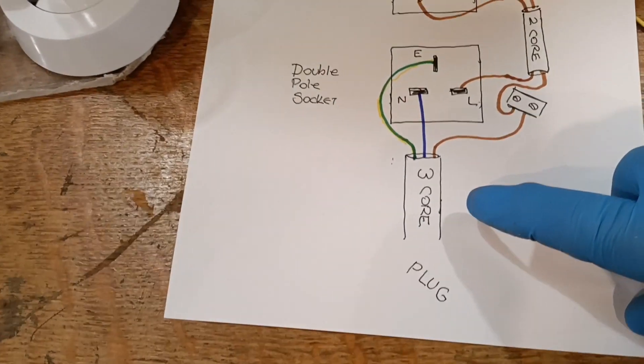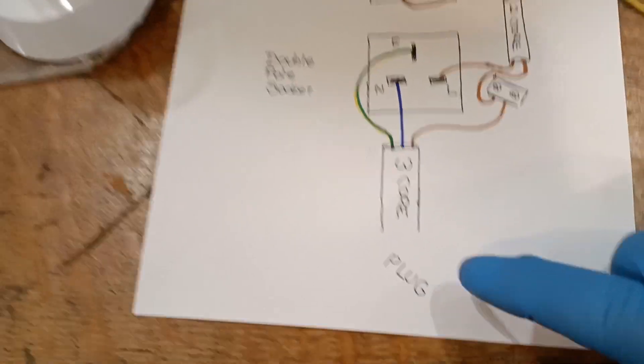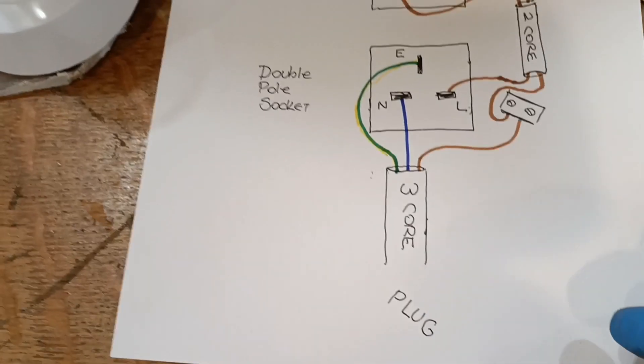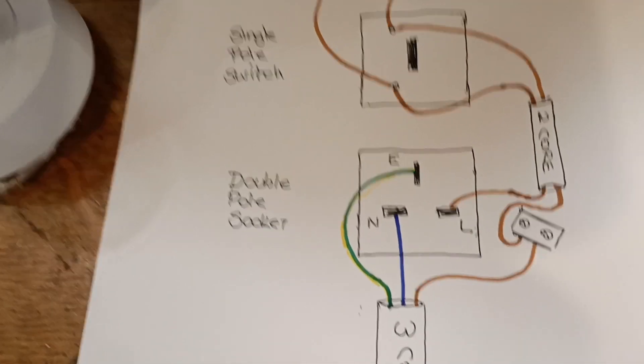You need a 3 core cable with a plug on the end with a 3 amp fuse. Don't use the 13 amp in there, use a 3 amp. So your earth wire goes to your earth terminal.